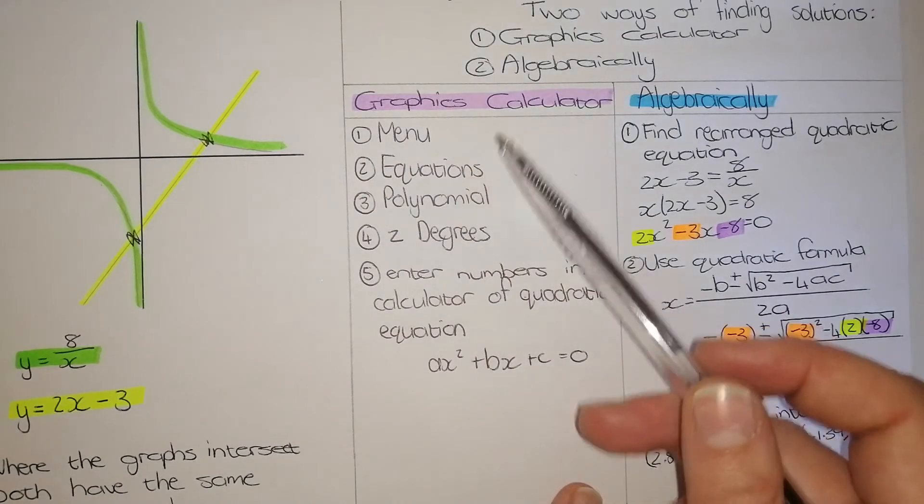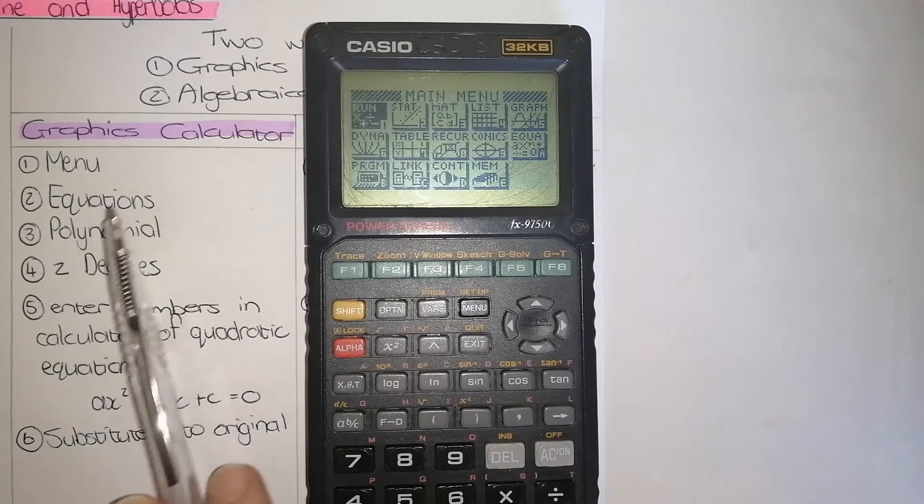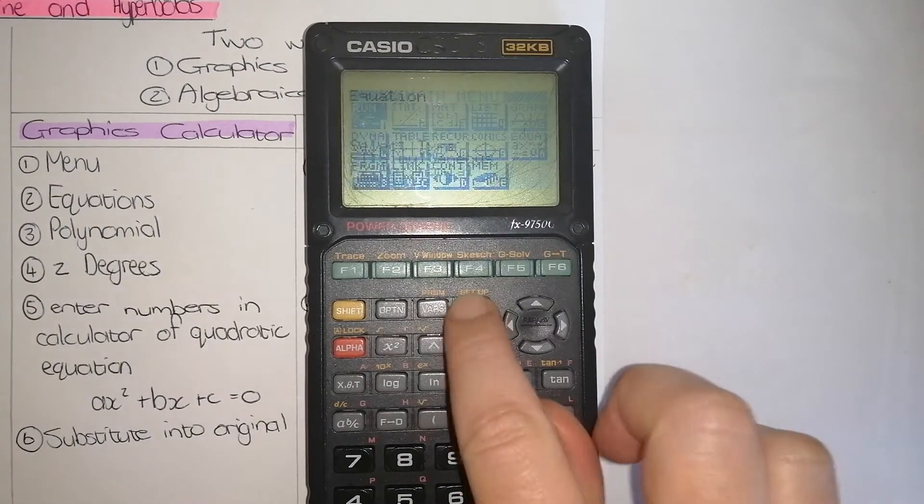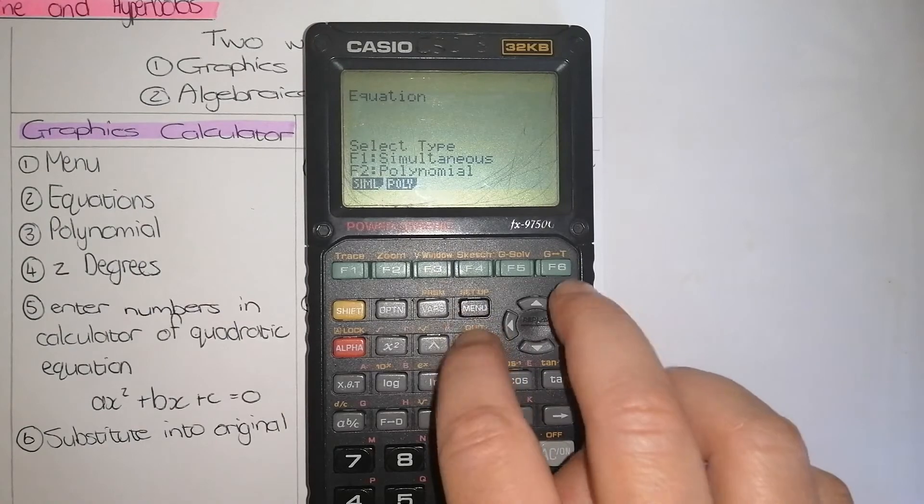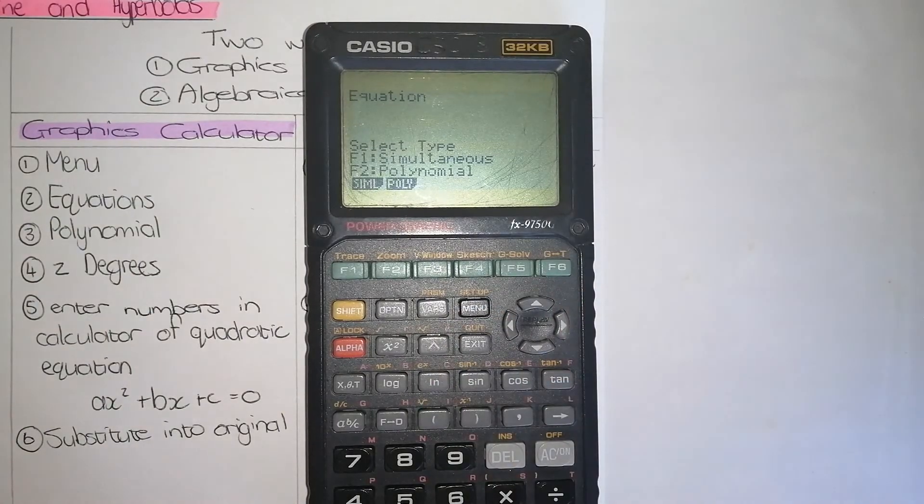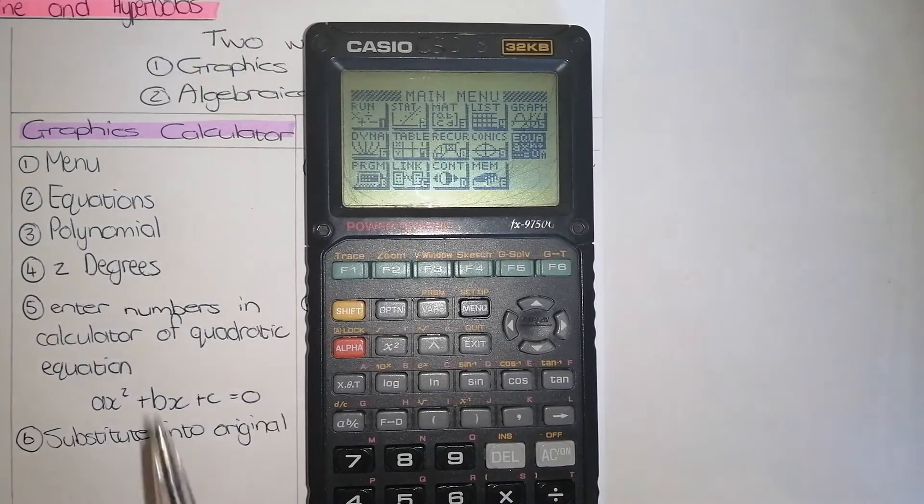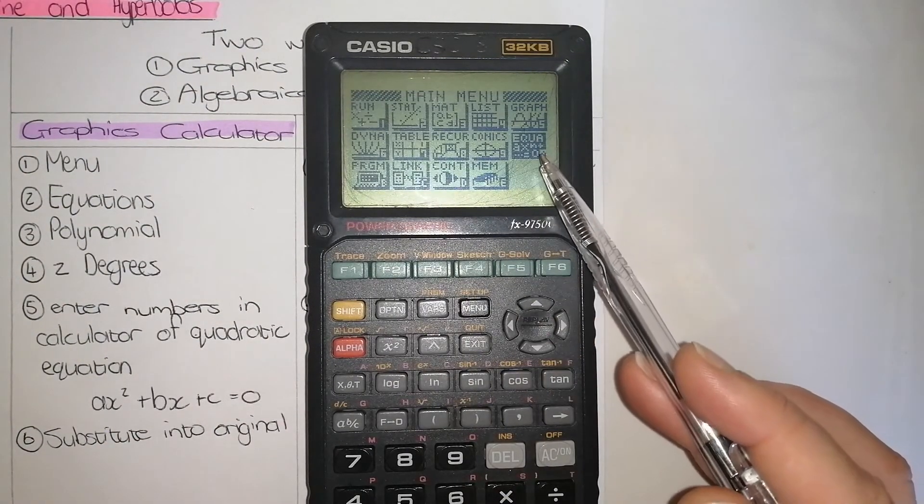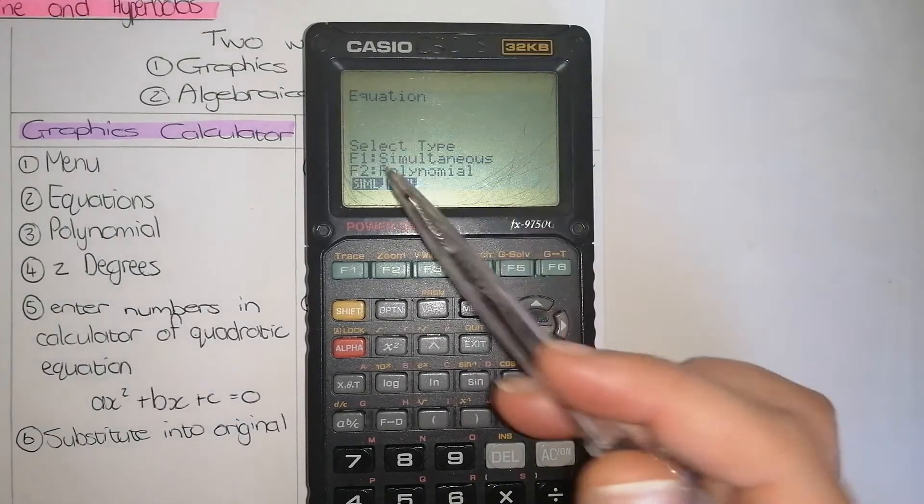Now we're going to find it using the graphics calculator. When using the graphics calculator, these are the steps we need to use. So step one is we need to go to menu, so the menu button is there, press menu and this is the screen you will see. This is the screen you will see. Step two is we need to go to equations. On this calculator, equations is down there. So after you've highlighted that one, press enter and this is your screen.